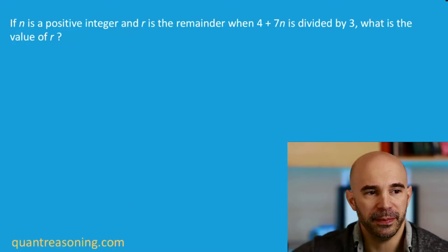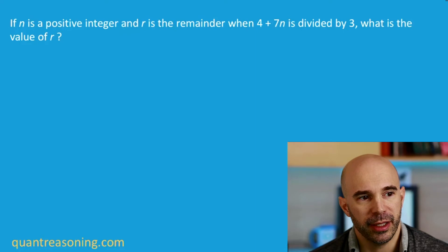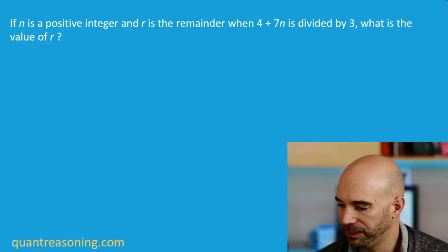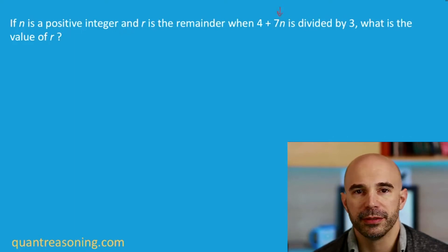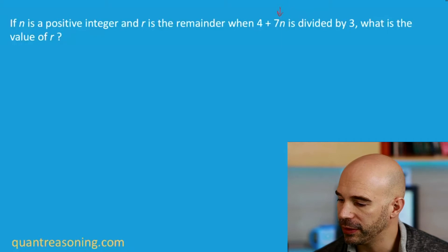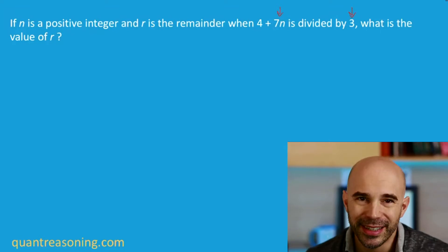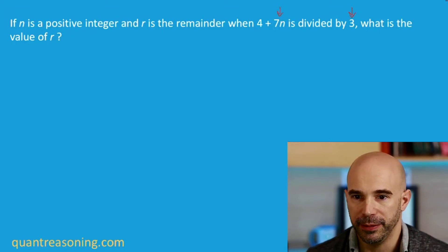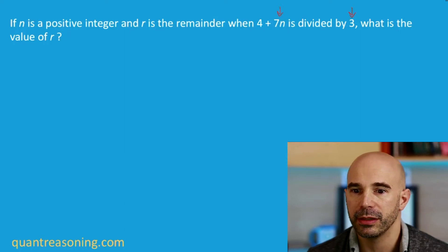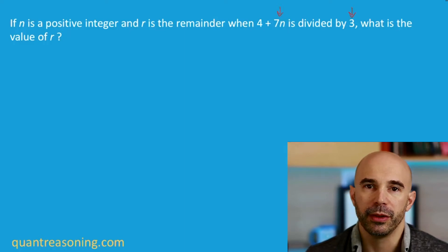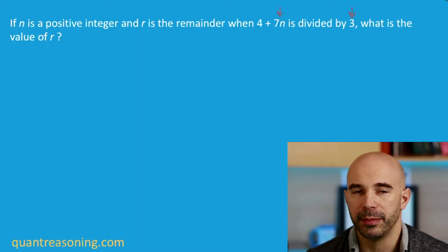I want to share with you what jumps out at me when I read this question stem. What jumped out at me is that on the one hand, we have some multiple of 7 within the expression that they're interested in, but on the other hand, the divisor — the factor that they're asking about — is 3. And where my mind goes immediately is, is there any relationship between 7 and 3?